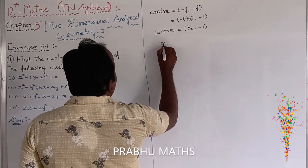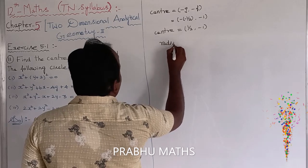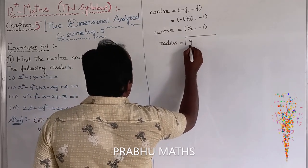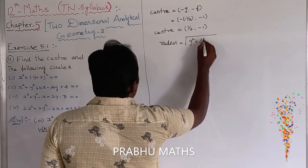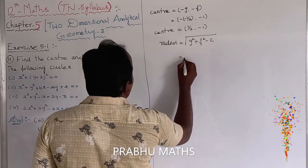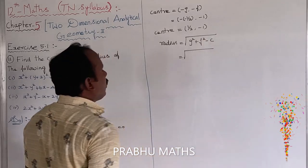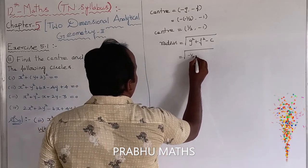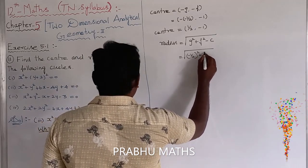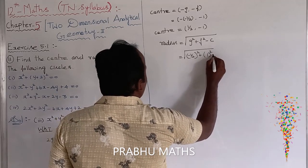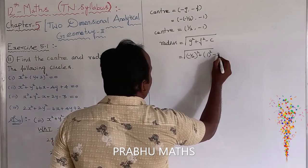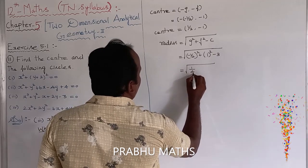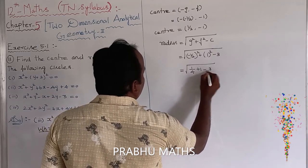Next, to find the radius value: radius is equal to the square root of g squared plus f squared minus c. So that is equal to the square root of minus 1 by 2 the whole square, plus 1 the whole square, minus 3. That equals root of 1 by 4 plus 1 minus 3.